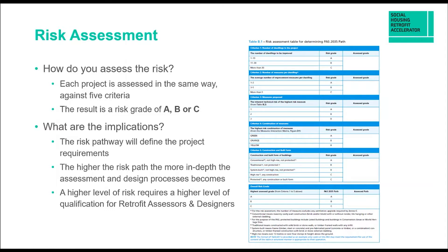There are some interesting things you can do in terms of the risk profile, but it's really important when scoping your projects to understand the implications of the risk pathways. The risk pathway essentially defines the project requirements — your monitoring and evaluation requirements, any air tightness testing needed, and the inherent risk of the project. The higher the risk pathway, the more in-depth the assessment and design process becomes. Working to pathway A carries fewer requirements for the designer and specification than a pathway C project, and higher-risk pathways B and C require higher qualifications for your retrofit assessors and retrofit designers.